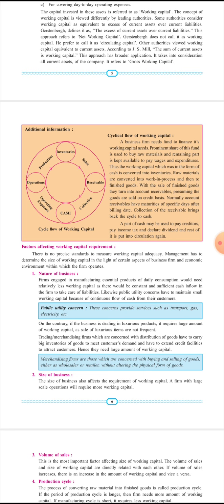और ये credit में बेचा हुआ माल जो account receivable बन गया, जब पैसा आ जाएगा तो वो cycle complete हो जाएगी — इसको हम बोलेंगे cyclic flow of working capital। Working capital का पैसा पहले raw material में use किया गया → inventory बनी → processing करके finished goods बनाए → sale credit पे किया → receivable बना → debtor ने पैसा दिया → cash seller के पास आ गई। इस तरह से working capital का cash का circle complete होता है। Next session में हम factors affecting working capital requirement study करेंगे। Thank you।